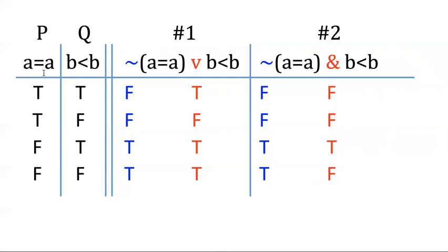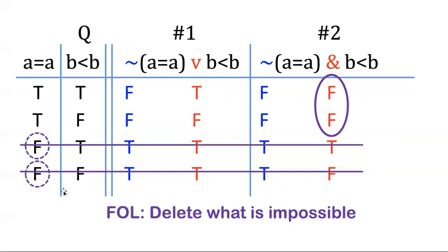So A equals A. I know that that cannot possibly be false, even though the truth table doesn't know it. So I can delete those two rows. Those are FO impossible. And look what happens when I do that. I cross these rows off. And look, the only possibilities as far as first order logic goes is that this thing is false. So that tells me this sentence is an FO falsity.